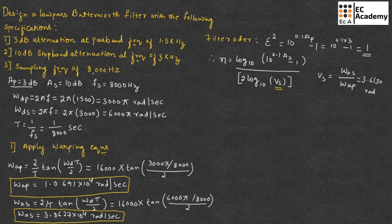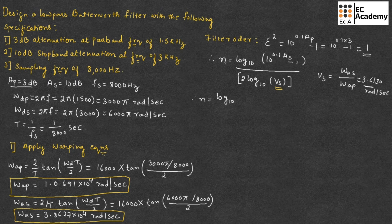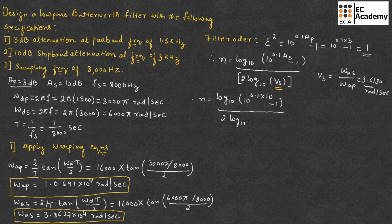Substituting the value of Vs = 3.6130 into the formula, N equals log base 10 of [10^(0.1 × 10) minus 1] divided by 2 * log base 10 of 3.6130. This value works out to 0.8553, which we approximate and round up to N = 1.